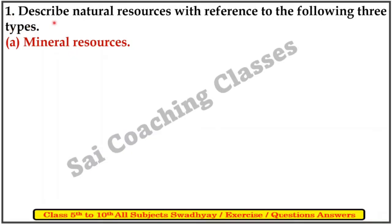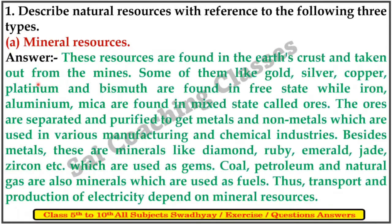First question: Describe natural resources with reference to the following 3 types. First: Mineral Resources. Answer: The resources found in the earth's crust and taken out from mines. Some of them like gold, silver, copper, platinum and bismuth are found in the free state, while iron, aluminium and mica are found in mixed state called ores. The ores are separated and purified to get metals and non-metals which are used in various manufacturing and chemical industries.